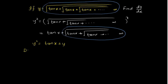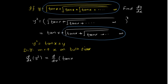Now differentiate with respect to x on both sides. Taking the derivative of y squared equals 10x plus y, we apply the linearity property: derivative of 10x plus derivative of y.